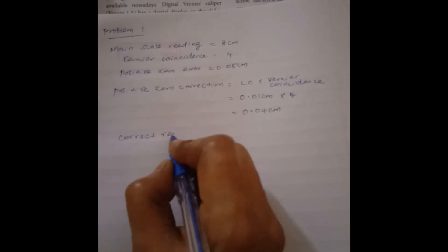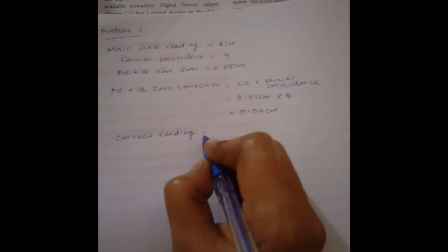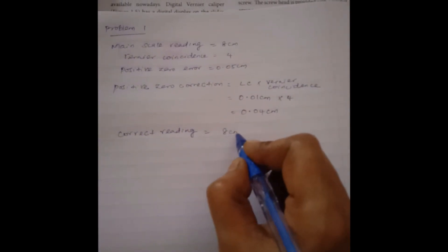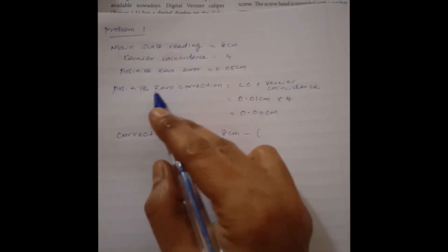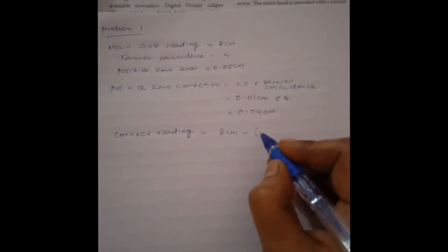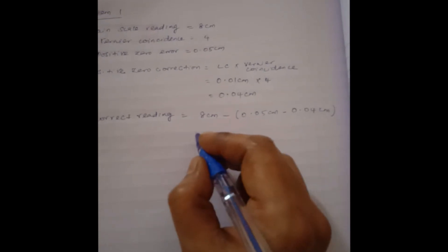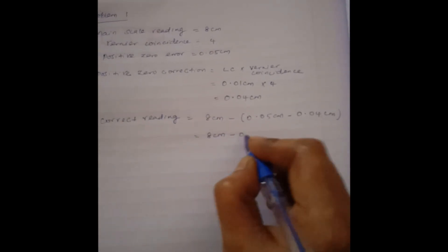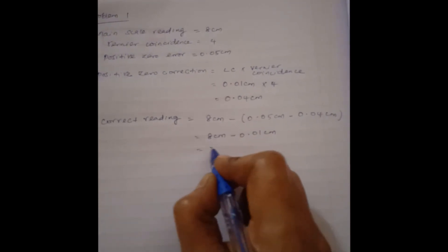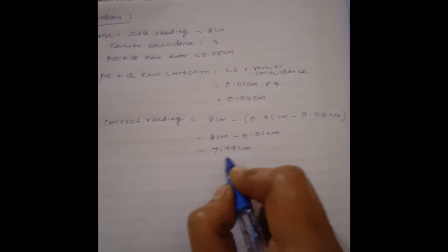Now we are going to calculate the correct reading. If you have a positive zero correction, you will subtract it from the main scale reading. So correct reading equals main scale reading 8 cm minus positive zero correction. We also have the positive zero error: 0.05 cm minus 0.04 cm, which equals 8 cm minus 0.01 cm, which equals 7.99 cm. This is your correct reading.